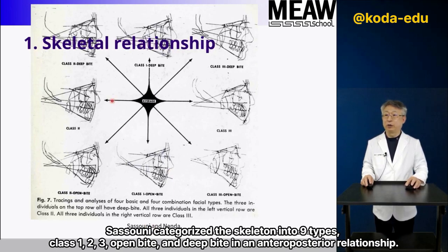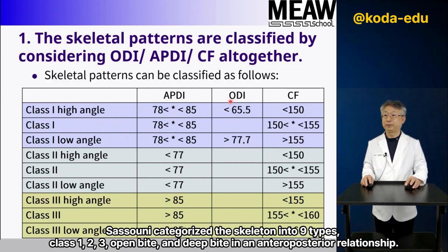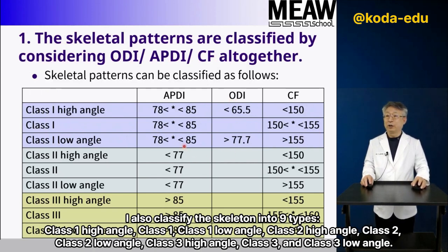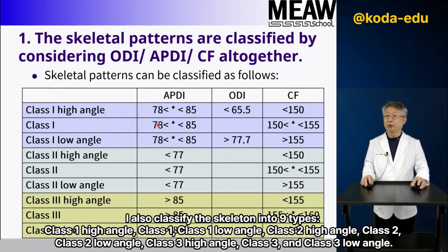Sassoni categorized the skeleton into nine types — class 1, 2, 3, open bite, and deep bite — in an anteroposterior relationship. I also classify the skeleton into nine types: class I high angle, class I, class I low angle, class II high angle, class II, class II low angle, class III high angle, class III, and class III low angle.